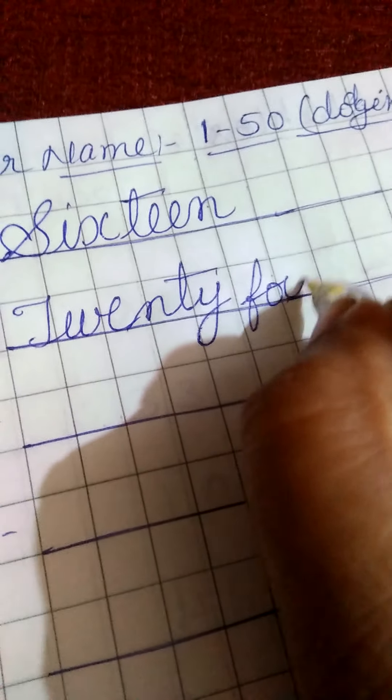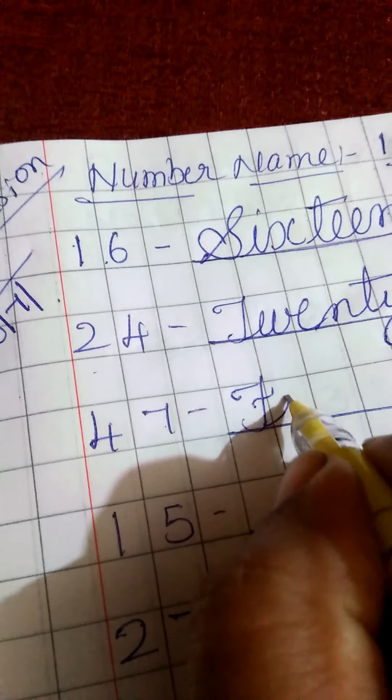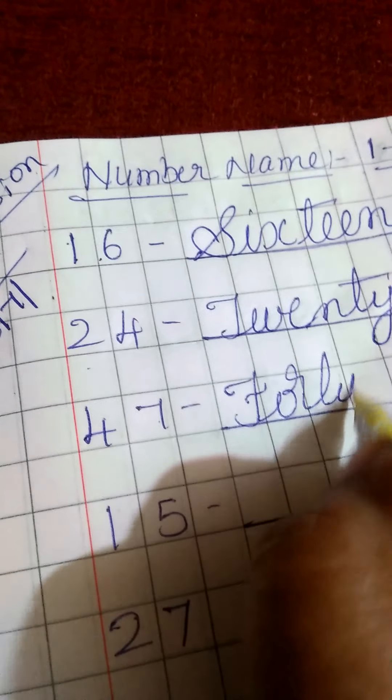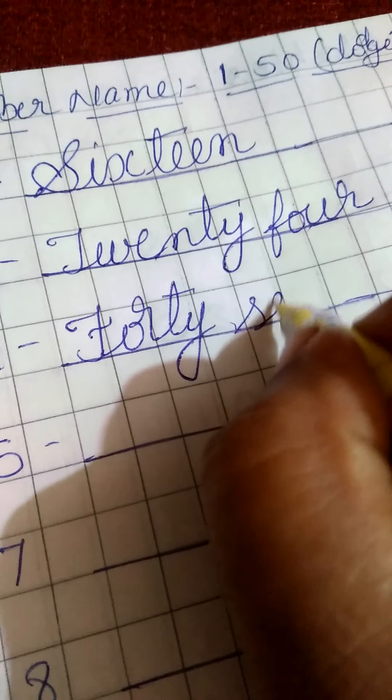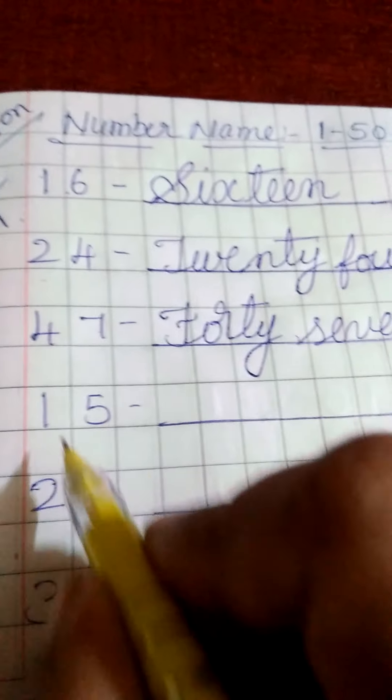F-O-U-R, four. Next 47. F-O-R-T-Y, forty. S-E-V-E-N, seven. Next 15.